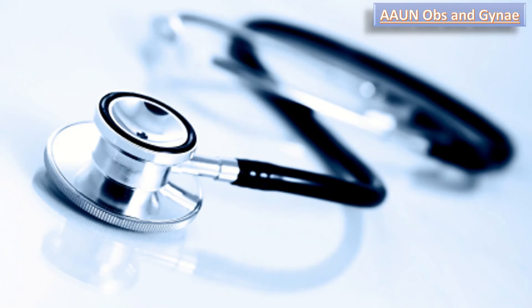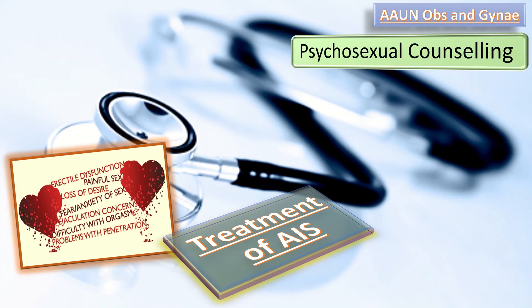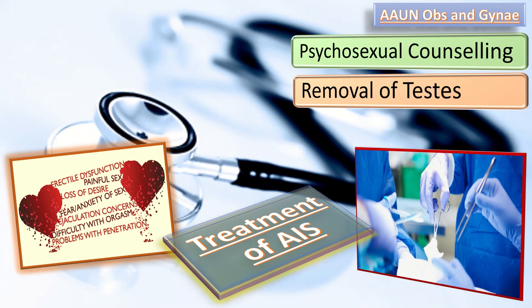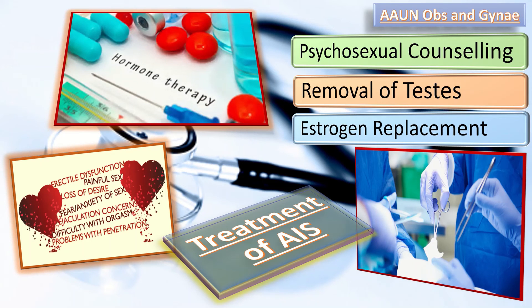Treatment of AIS begins with psychosexual counseling, as treatment and gender assignment can be a very complex issue that must be targeted to each individual. Second is removal of the testes, as there is a risk of neoplasia. Testicles in the wrong place may not be removed until a child finishes growing and goes through puberty, at which time they may be removed because they can develop cancer, similar to undescended testicles. Estrogen replacement therapy may also be prescribed after puberty.